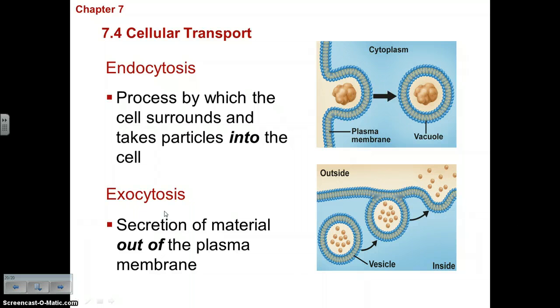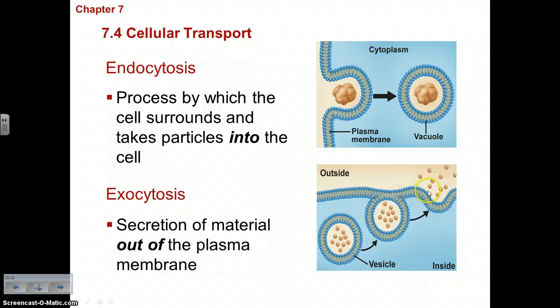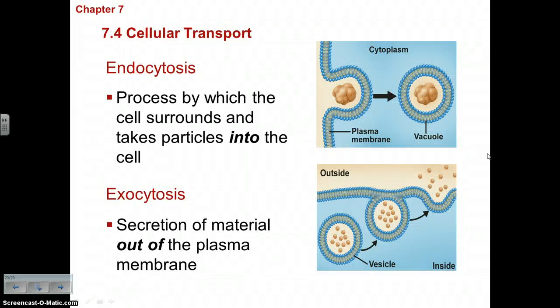In endocytosis, something bumps into the cell membrane and, using energy, the membrane wraps around the particle and brings it in as a little vesicle. In exocytosis, the vesicle moves up to the membrane from inside the cell, and with the use of energy, those particles are released outside. That is cell transport — the movement of materials in and out of the cell through the very important structure of the cell membrane.